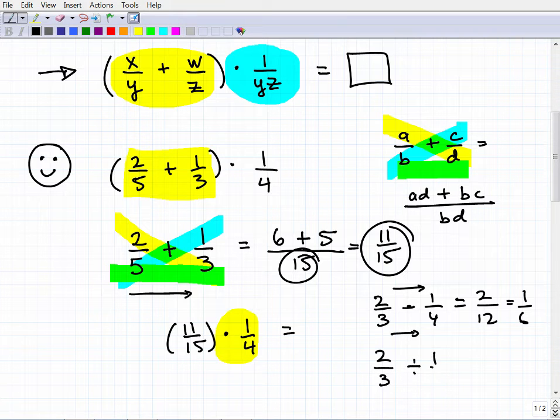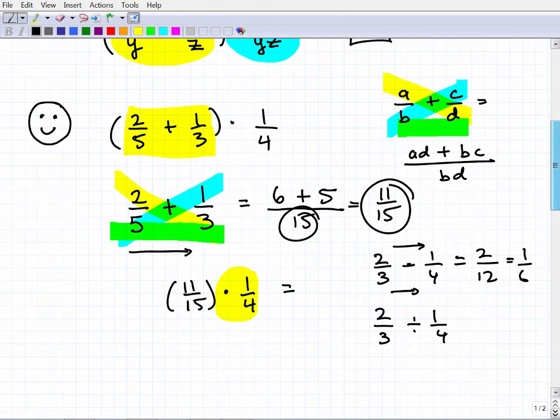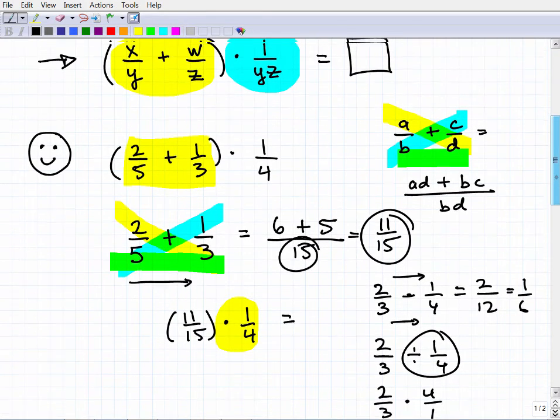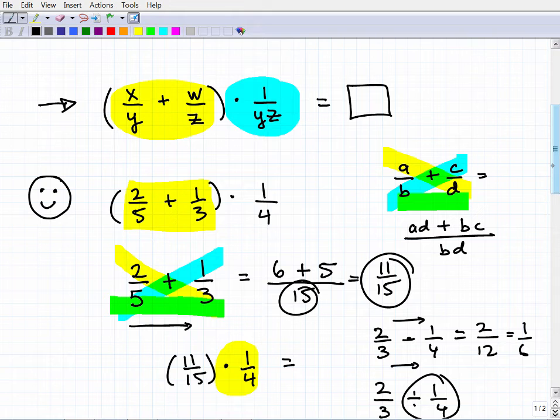But if this was division, let's write it over here: two thirds divided by one fourth. This is where you flip this fraction, so this would be two thirds times four over one, and then you just go ahead and proceed from there. What I find with a lot of students—and I teach a lot of people, doing this for a long time—is that even if they were great at math, if you've been away from math for a long period of time, you need to review.